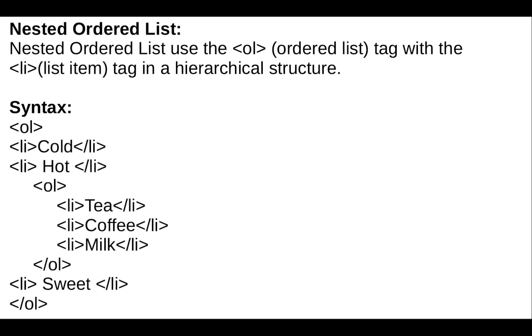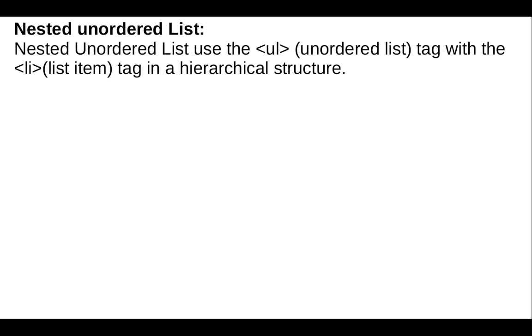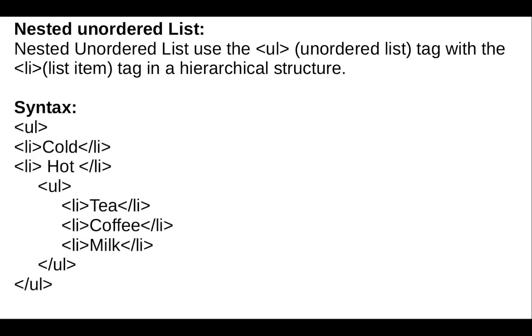The syntax for nested ordered list: open the ol tag, add list items, then add another ol tag inside with its own list items, then close the inner ol. Add more items if needed and close the outer ol tag. For nested unordered list: open the ul tag, add list items, then in between add another ul tag with its items, close the inner ul, then close the outer ul tag.